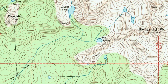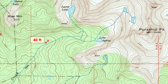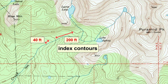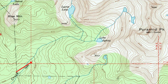Zooming into the upper right of this quadrangle, we find Pyramid Peak, the mountain that gives this quadrangle its name. Contour lines come in two types: light brown and dark brown. Each contour line is separated by 40 feet, but the dark brown index contours appear after every fifth contour, grouping lines into 200-foot sections. Moving up this valley on the left, we find index contours at 7600, 7800, 8000, then 8200, 8400, 8600, and then four more regular contours before reaching the peak of Blue Mountain.